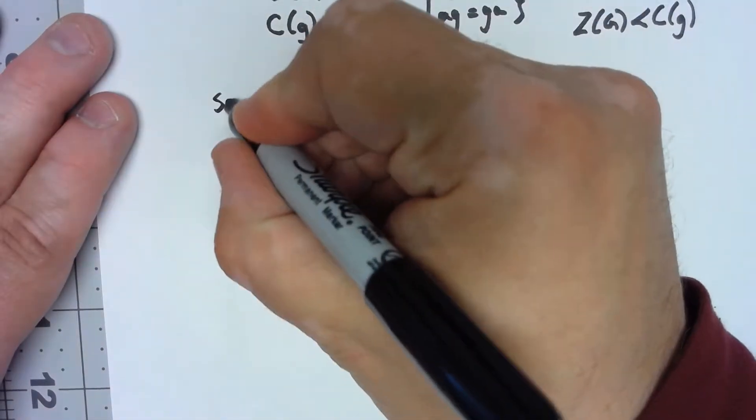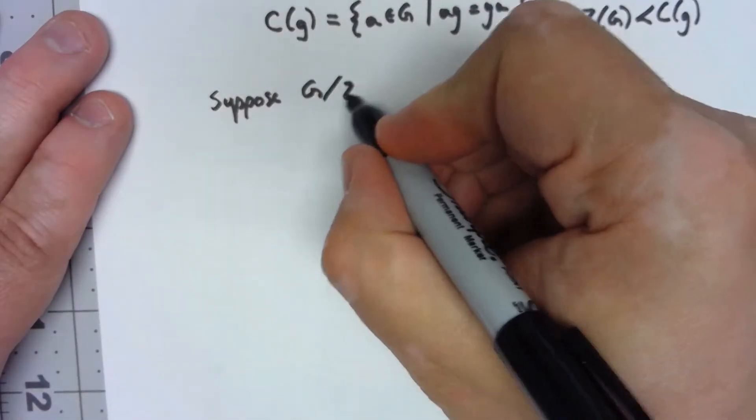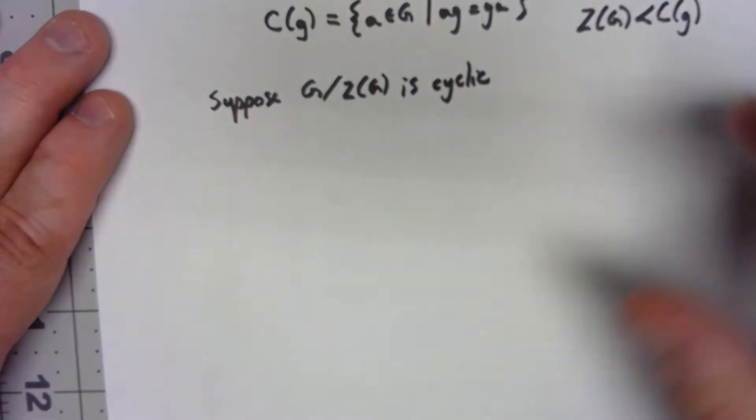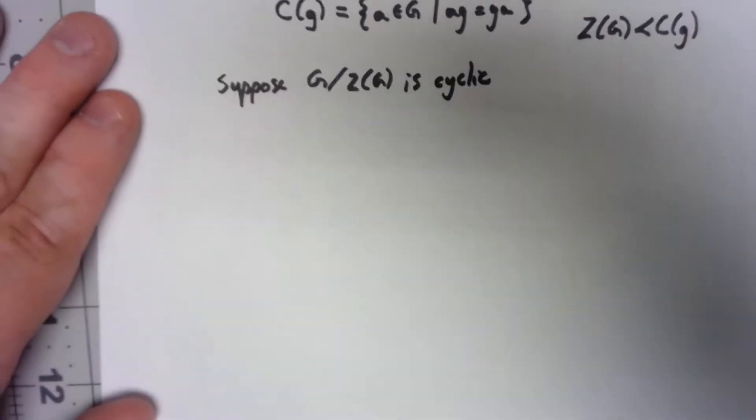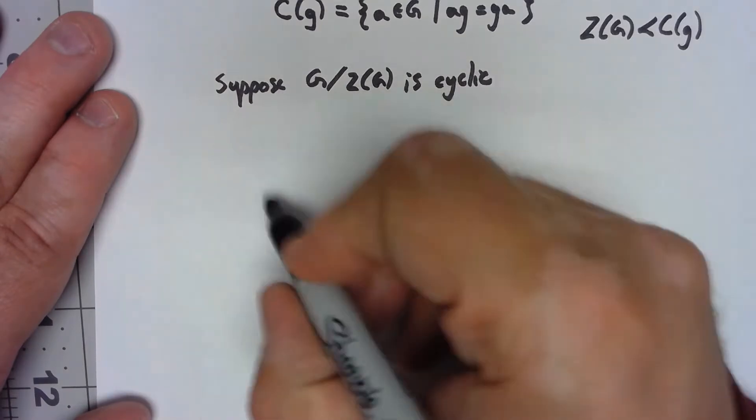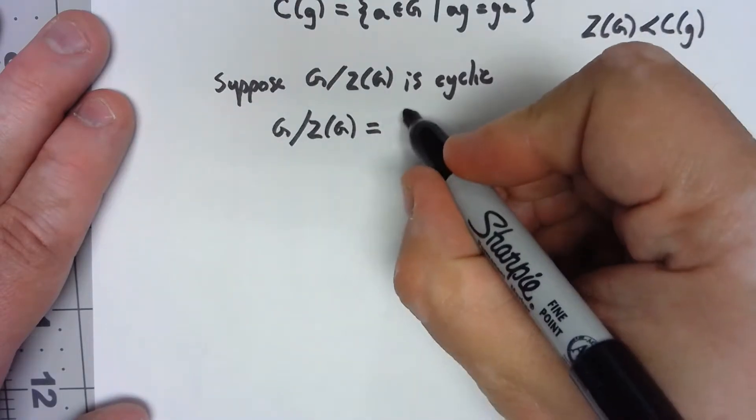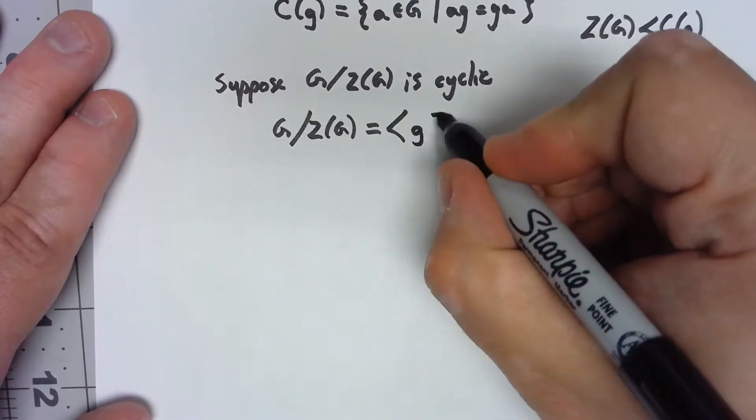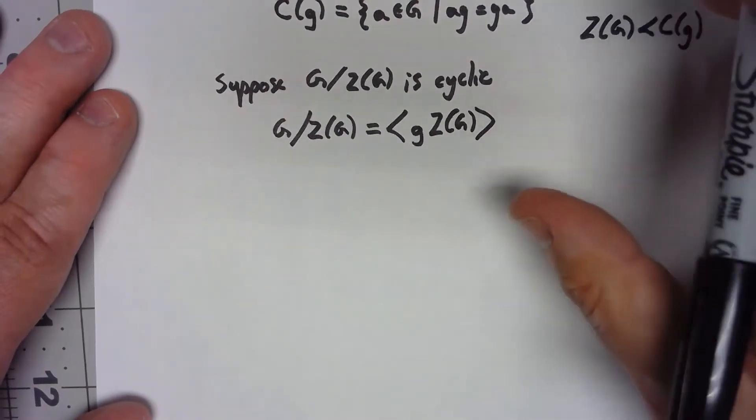Let's suppose our assumption that G mod Z of G is a cyclic group. Well what does that mean? Because that group is cyclic, that means that G mod Z(G) has to be the cyclic group generated by some G Z of G.